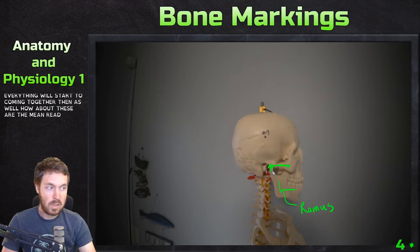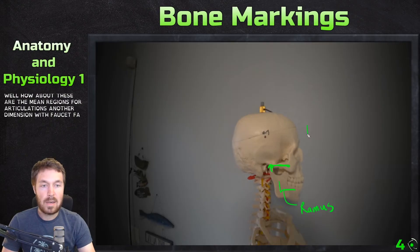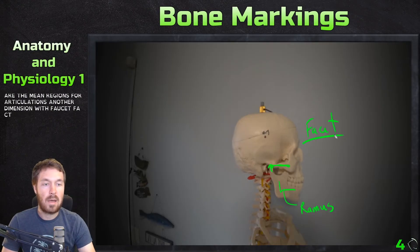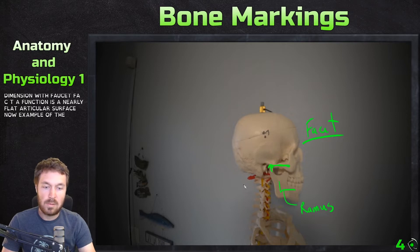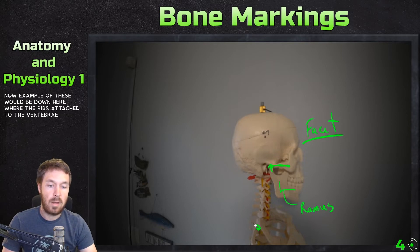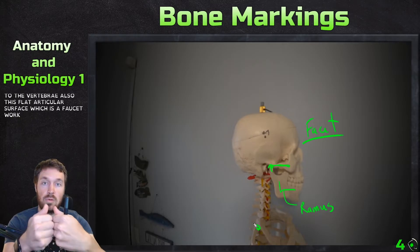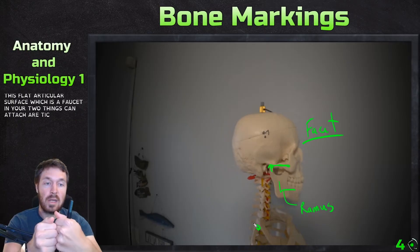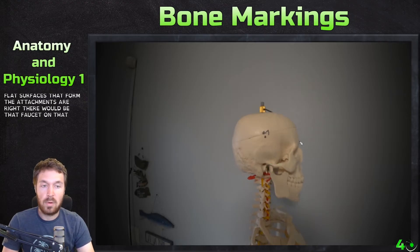Another one is a facet — F-A-C-E-T. A facet is a nearly flat articular surface. An example of these would be down here where the ribs attach to the vertebrae — that flat articular surface is a facet, where two things articulate with each other via two flat surfaces forming that attachment.